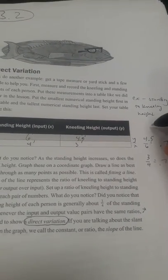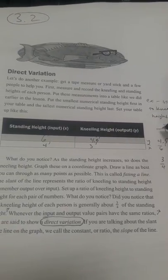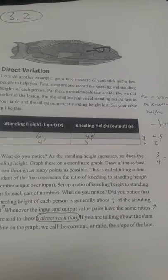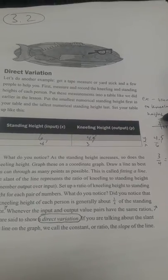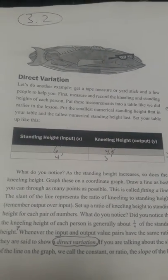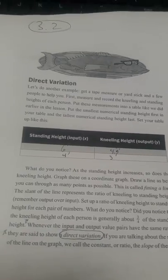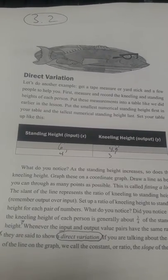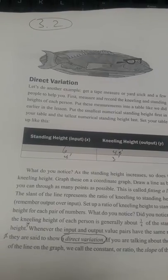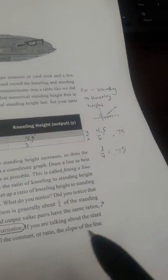If we were plotting them, as in standing height would be the x, so I'm going to go over 6 and up 4.5. I'll put it there. And then the next one would be over 4 up 3. Basically if we plotted another point, we'd see it's somewhere down here, and it'd be a straight line. And that would show direct variation if it's a straight line.